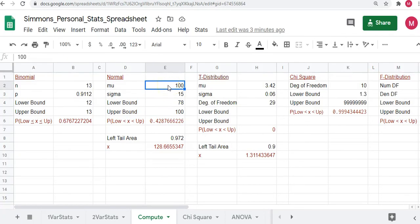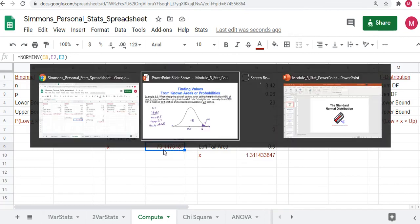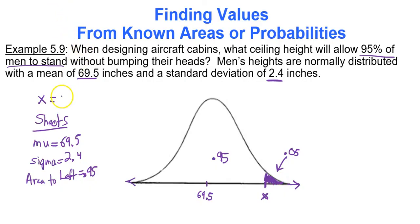All you have to do is type in mu, 69.5 and type in sigma, 2.4. And the only other thing you care about, you don't care about lower bound, upper bound, we're not calculating a probability, is your left tail area. Your left tail area is going to be .95. And then your data value will appear just below. 73.45. I like to round data values to two decimal places. 73.45 inches of course. 73.45 inches.